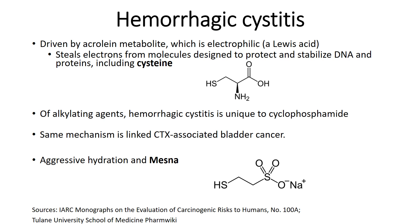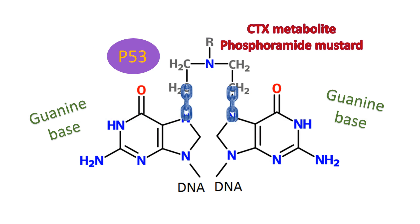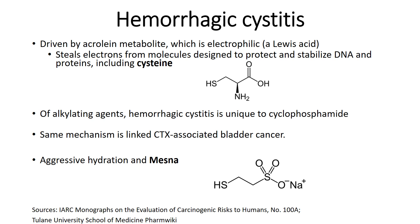One of the things with cyclophosphamide is that it is linked to hemorrhagic cystitis. Hemorrhagic cystitis in relation to cyclophosphamide therapy is driven by the acrolein metabolite. The acrolein metabolite is floating around throughout the body, being cytotoxic and very reactive — it is electrophilic, stealing electrons from thiols. It acts as a Lewis acid, stealing electrons from molecules designed to protect and stabilize DNA and proteins, including cysteine.